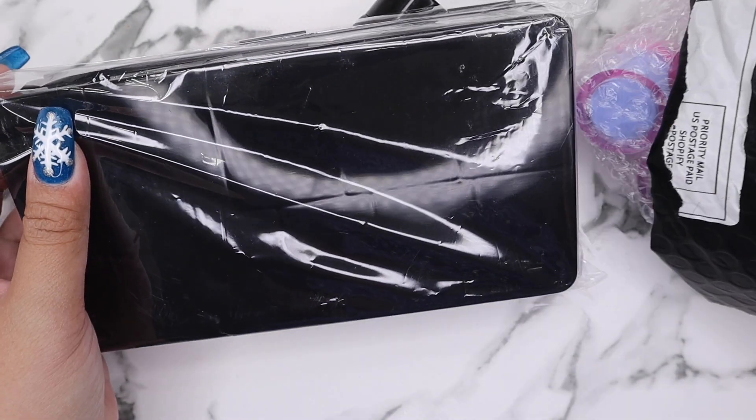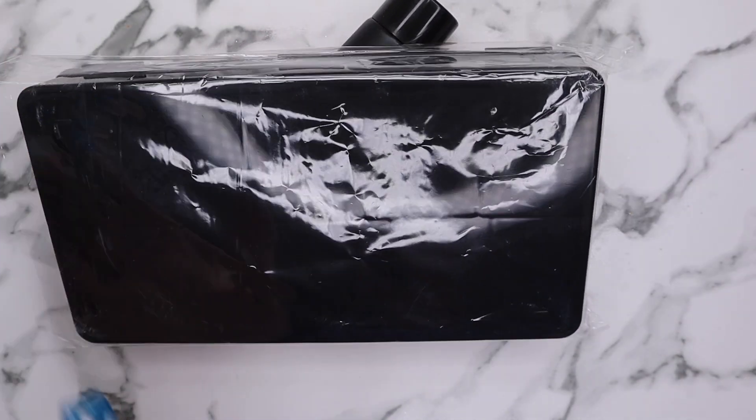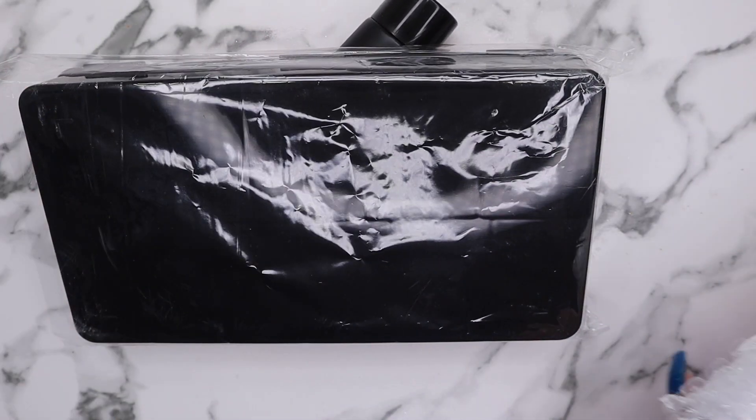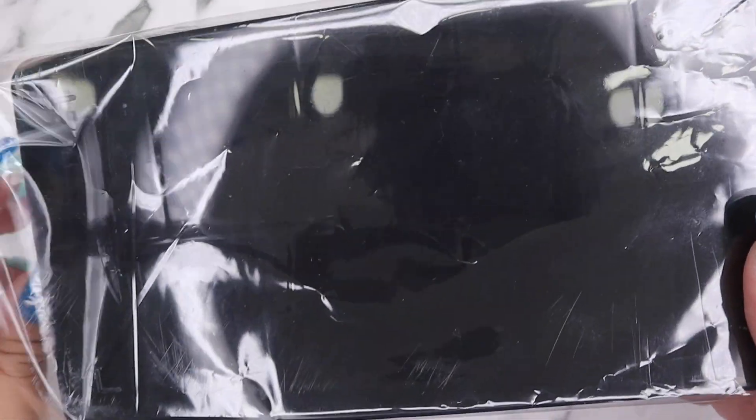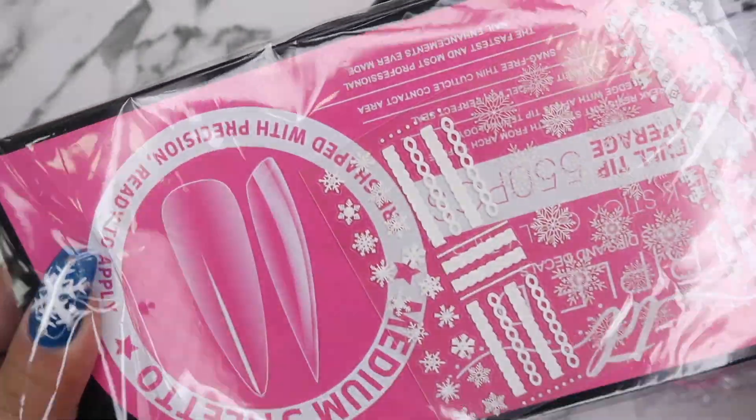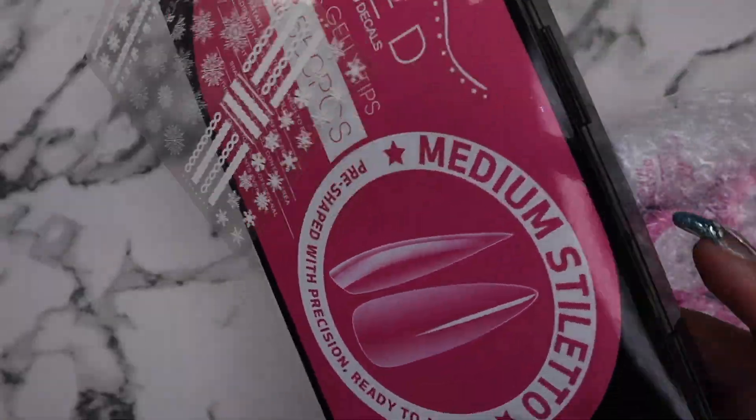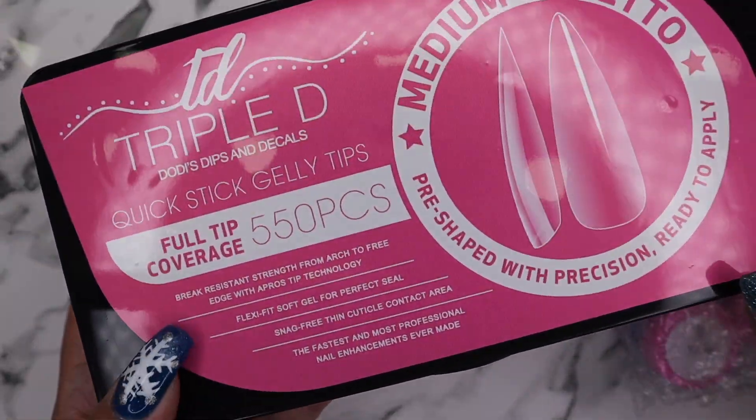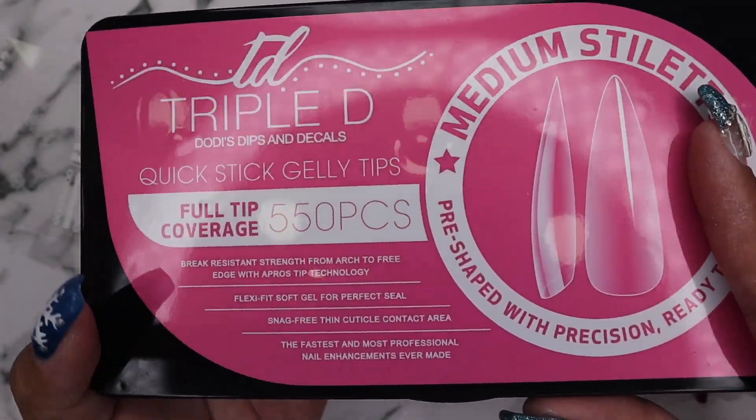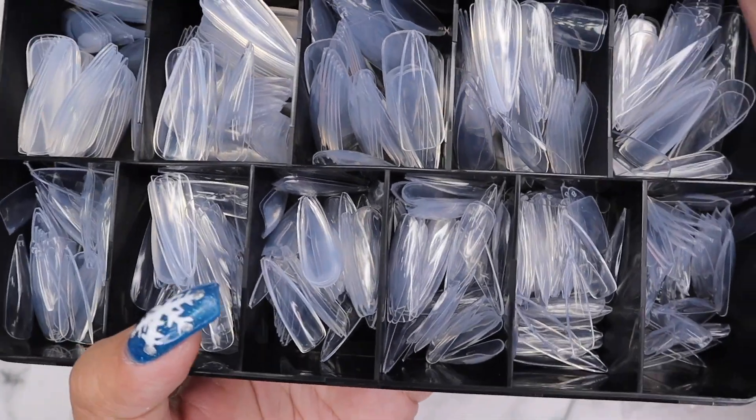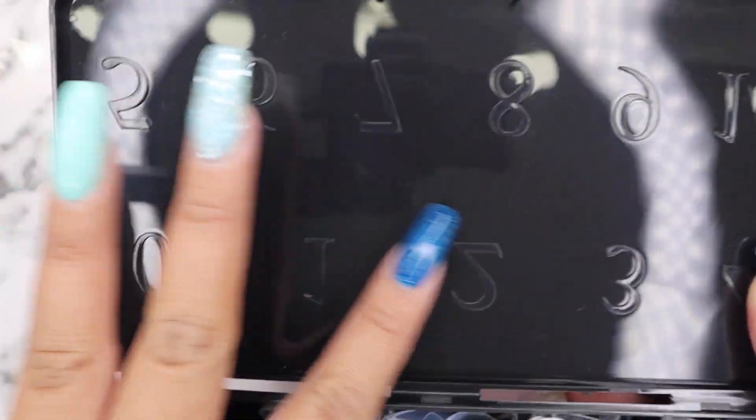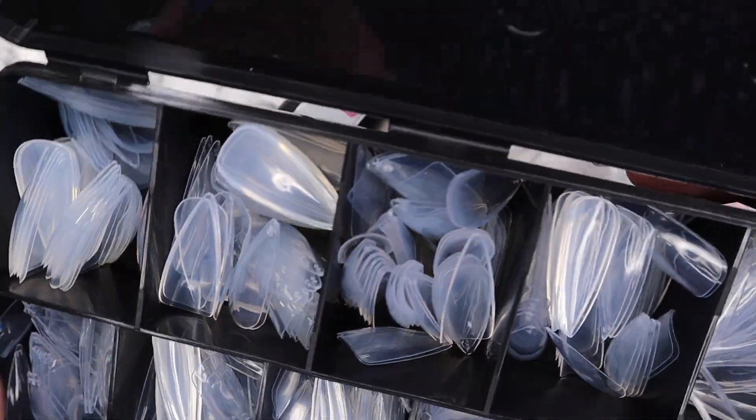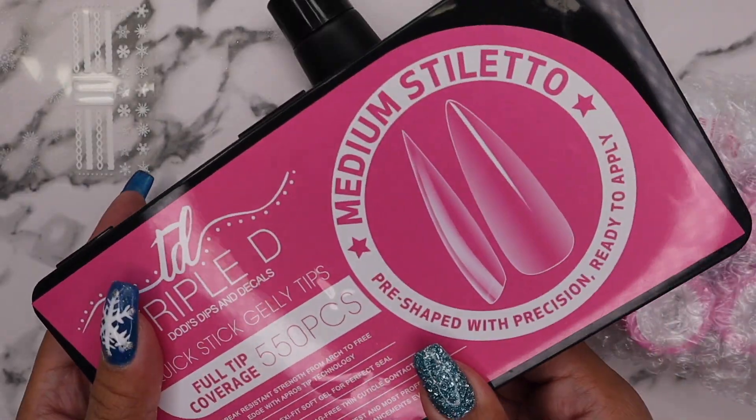This box retailed for $75 and it came with this bubble mailer because it doesn't fit in the regular pink Diva box. The first item that you're going to get is these medium stiletto jelly tips. This is 500 pieces full coverage jelly tips, and the shape is a stiletto so that you can just cut it into a coffin or make it almond.